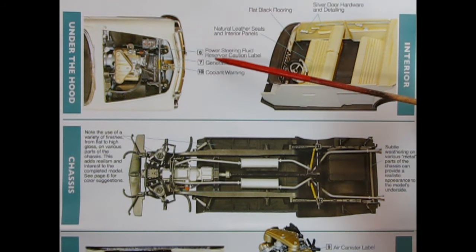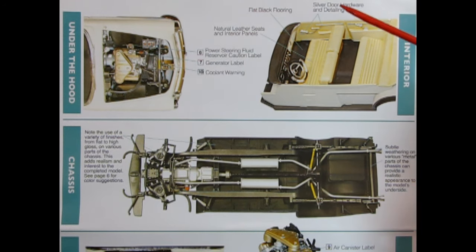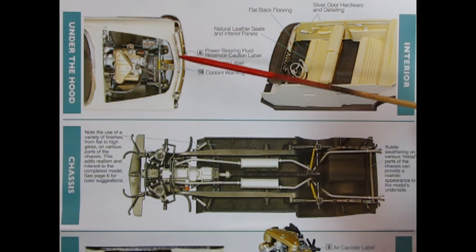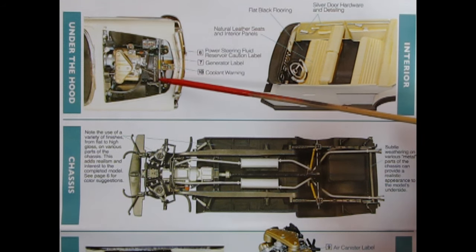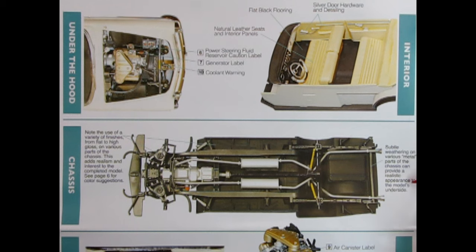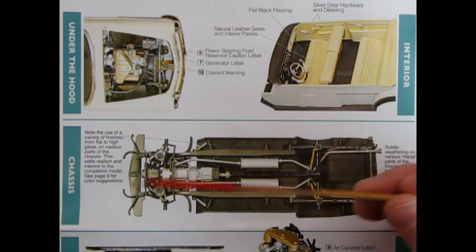On the back of the instructions we see our completed model. Now this is the one that Mobius made. And these are all the decals that are going on. We have the interior. It says to use black flooring, silver door handle hardware and detailing, natural leather seats and interior parts. Under the hood we have the power steering fluid reservoir caution label, generator label, and the coolant warning label going right here on the brace of the rad support. Underneath we have our chassis here. It says note the use of a variety of finishes from flat to high gloss on various parts of the chassis. This adds realism and interest to the completed model. Subtle weathering on various metal parts of the chassis can provide a realistic appearance to the model's underside.